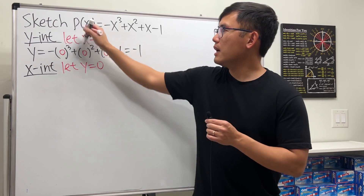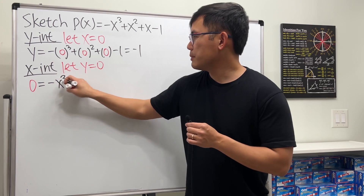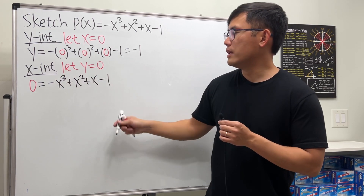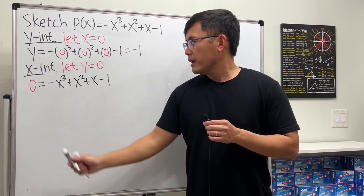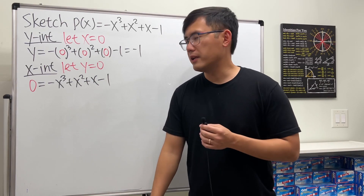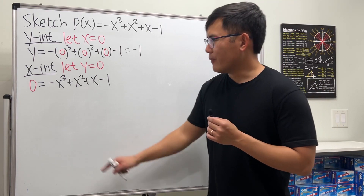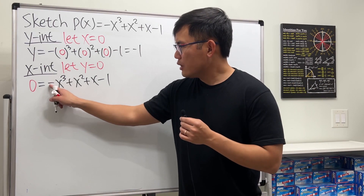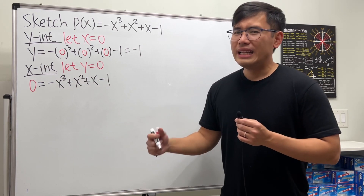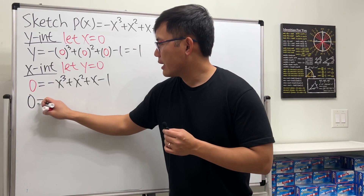Next we have the x-intercept. For this we will let y equal zero, plug in, and we get zero equals negative x³ + x² + x - 1. Notice that this has four terms, so let's do factor by grouping. It's actually factorable, which is really nice. However, the leading coefficient is negative one — I don't like that, so I want to factor that out.